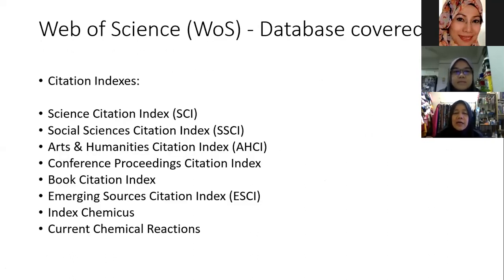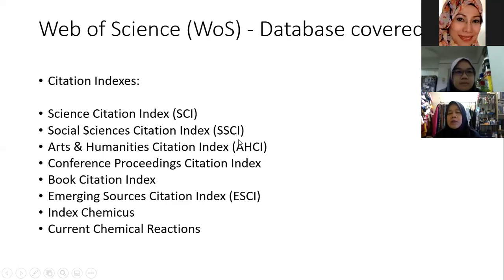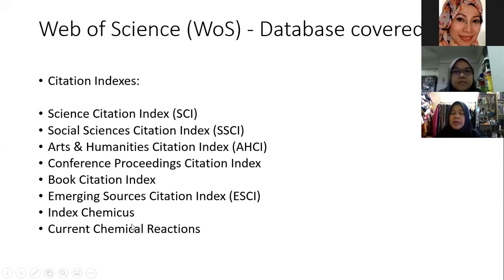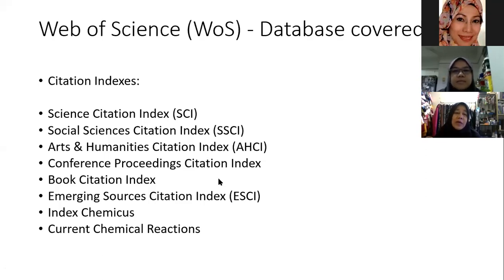To summarize about WOS: journals listed here cover life sciences, biomedical sciences, engineering, social science, arts and humanities. The strongest coverage includes natural sciences, health sciences, engineering, computer science, and materials sciences. All these journals put their WOS listing on their website, showing their impact factor — they are very high-quality journals.